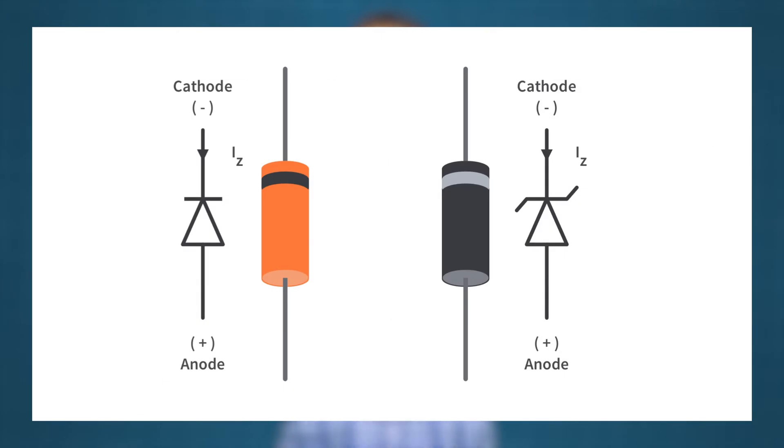Named after Clarence Melvin Zener, the discoverer of this electrical property. An easy way to remember this symbol is that, while the schematic symbol for a regular diode has a straight line representing the cathode, the Zener diode has a bent line that resembles the letter Z for Zener. It makes a lot of sense, right?